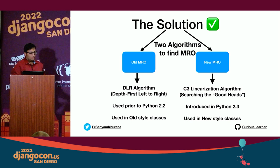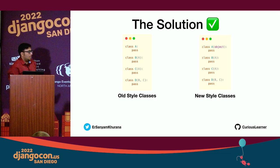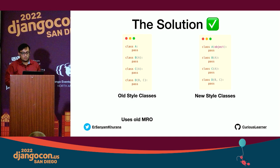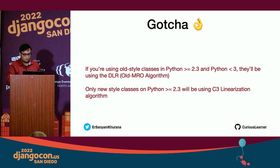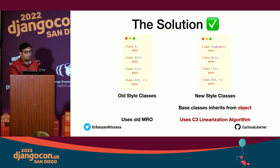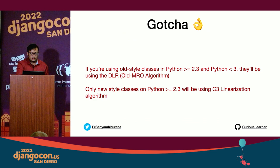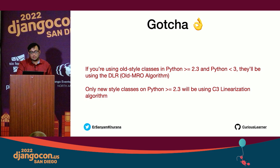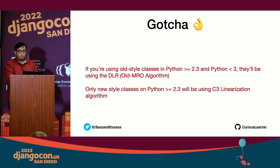Before proceeding, let's look at old-style versus new-style classes. Old-style classes have a base class that does not inherit from the root class 'object'. New-style classes have a base class that inherits from 'object'. Newer classes always use C3 linearization. The gotcha to remember is that if you're using old-style classes in Python 2.3 to 3 legacy codebases, you'll be using the DLR algorithm rather than the new one.